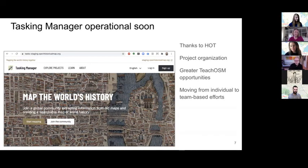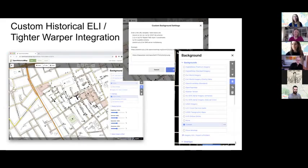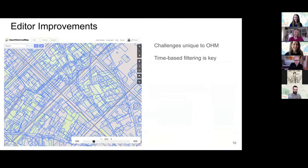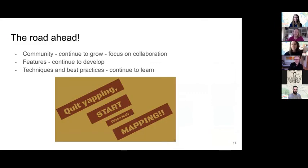It's a bit of a cue ball earth out there, so there's plenty of greenfield opportunities for mapping. Lots of cool new features coming — inspector improvements in the editor. We need to improve editing because when you have a lot of things changing over time, it can be hard. We're going to continue to develop our features and grow our community and continue to learn by doing. Thank you very much.